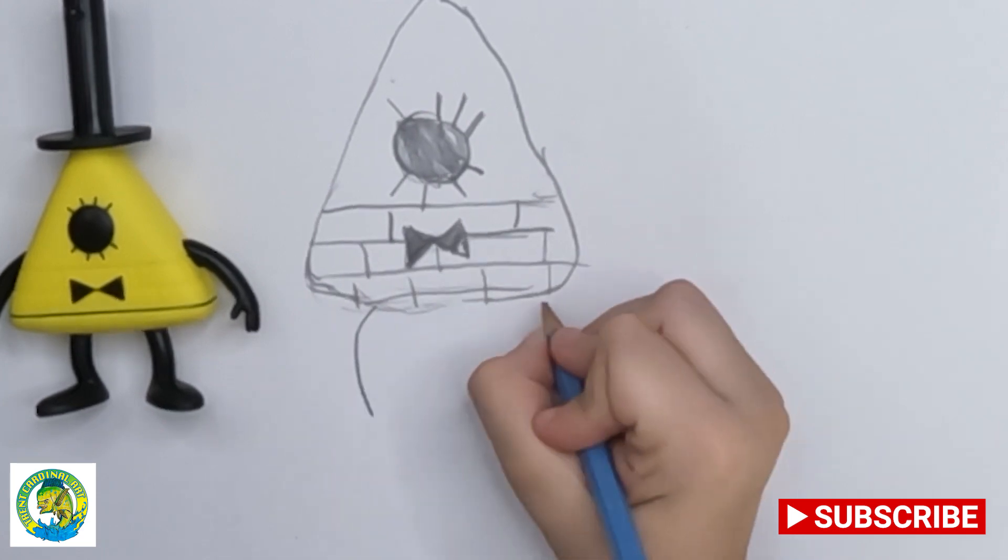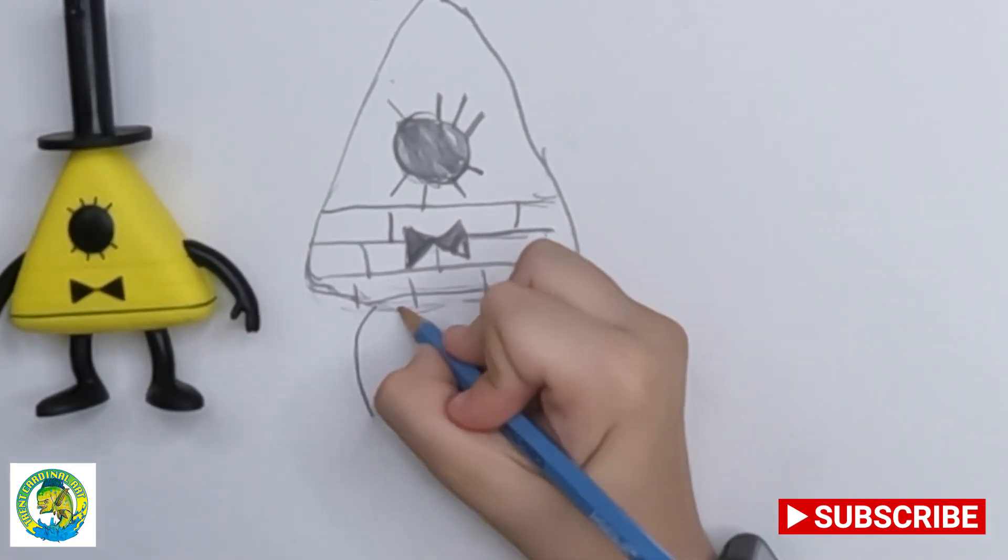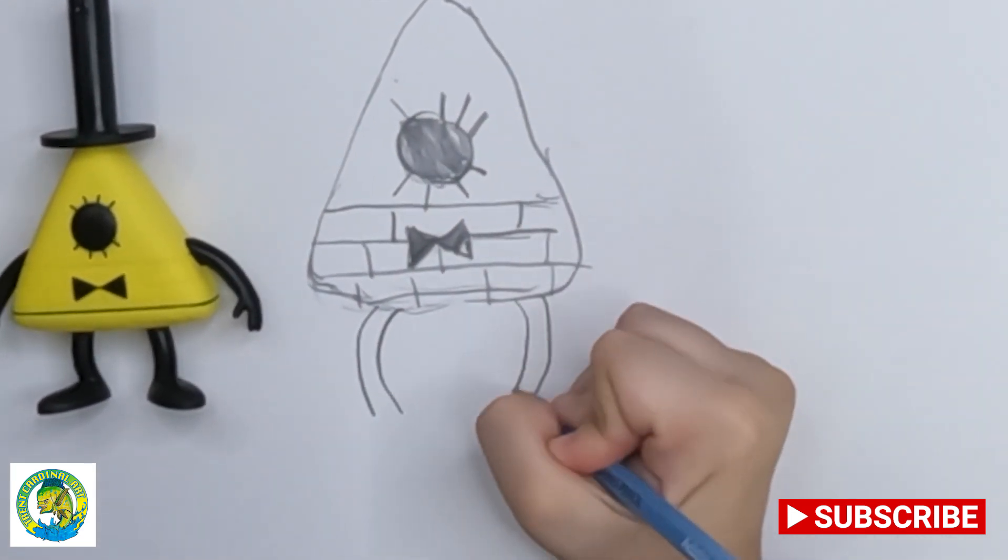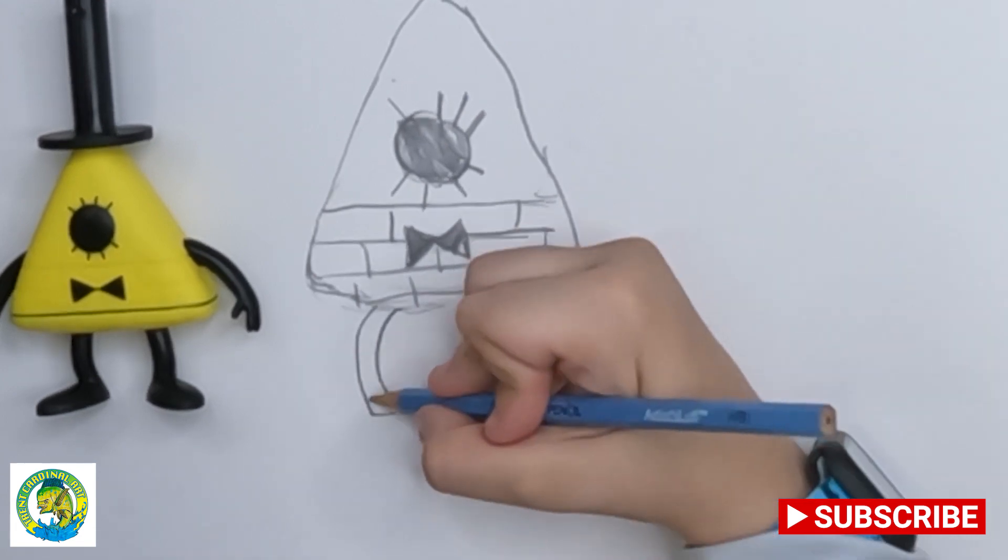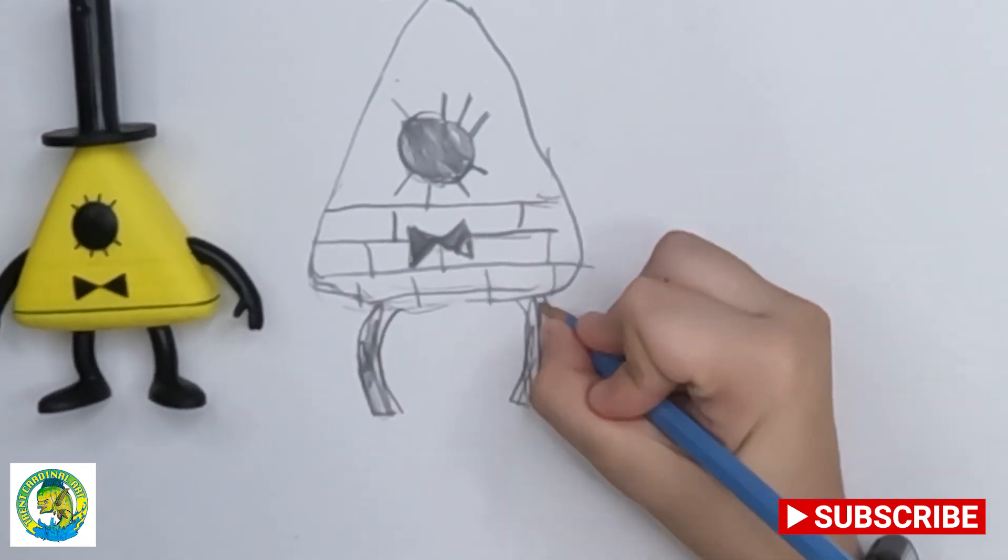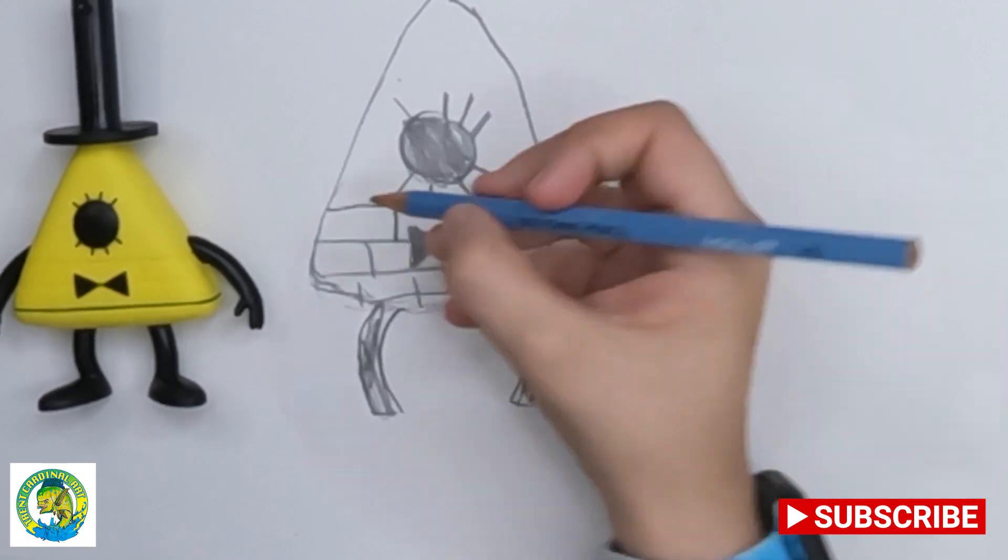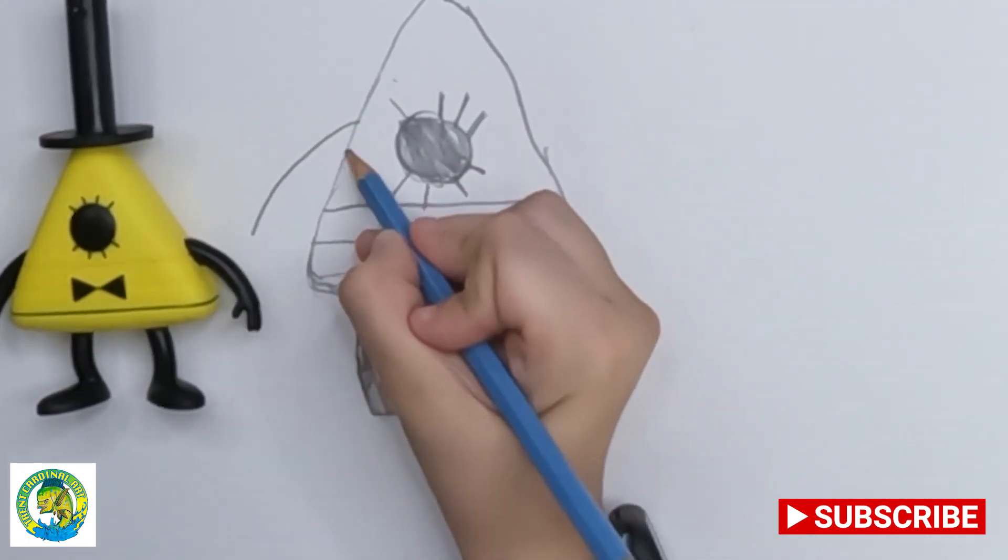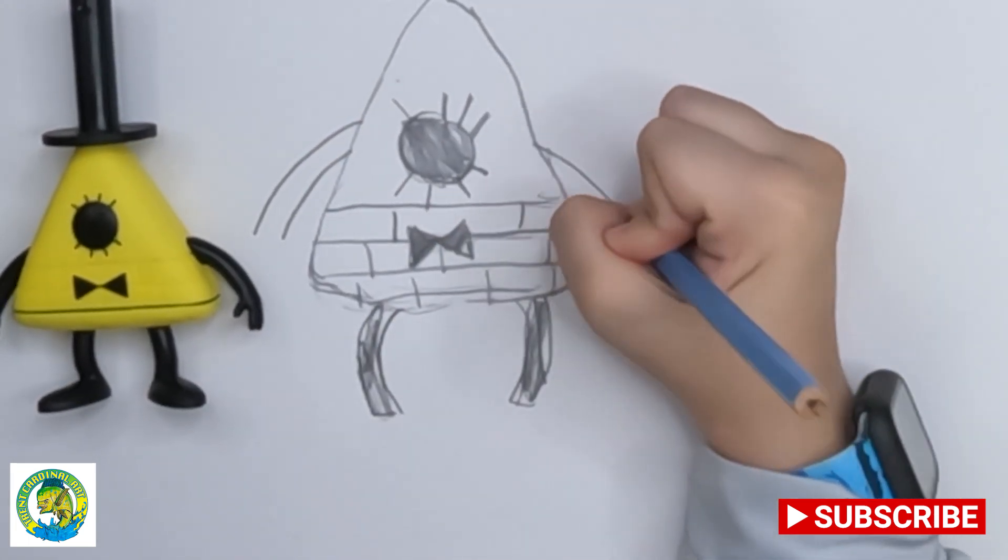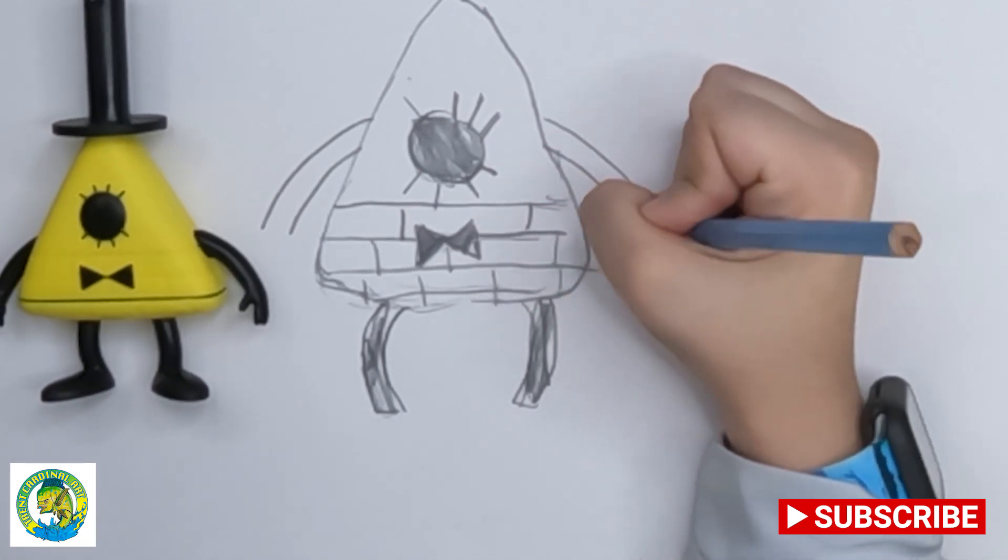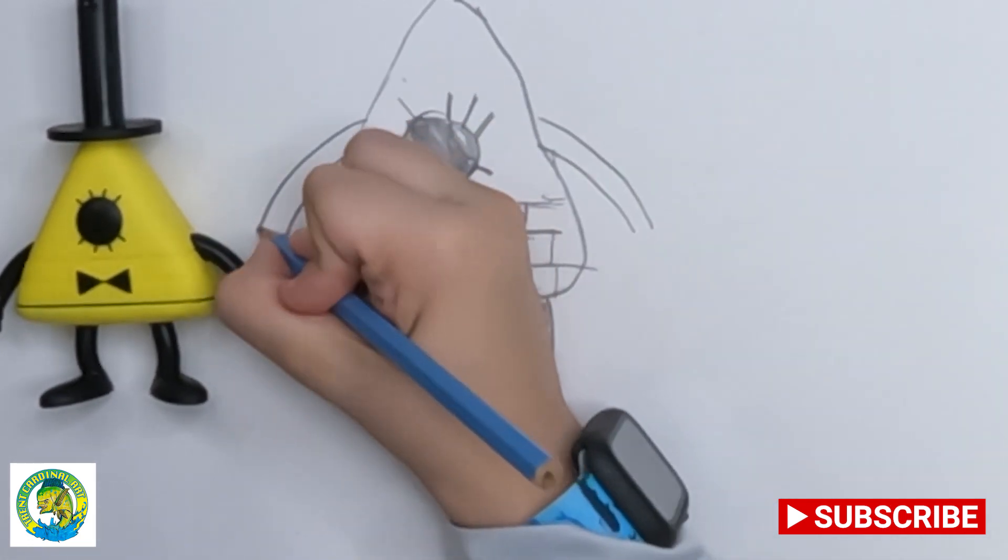And right here we're going to make a line. And another line. And we're going to draw that same line again. Then you can connect them and color them in. Then repeat on the other side for the bow tie.